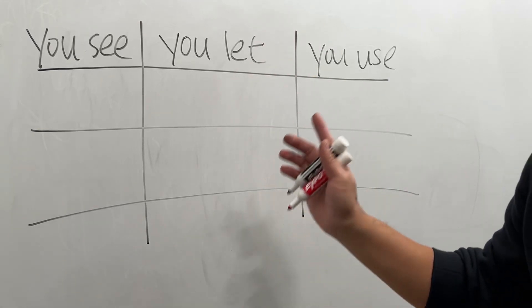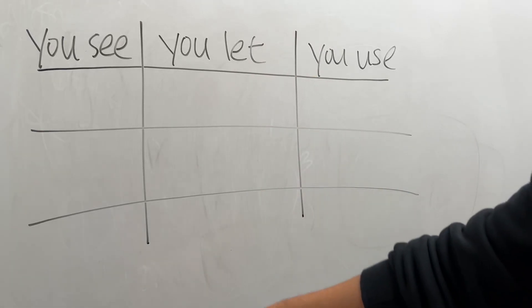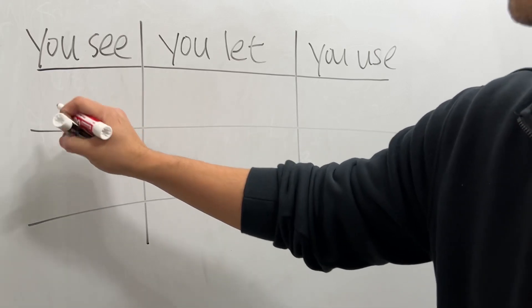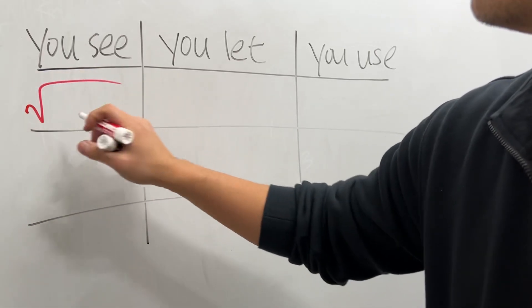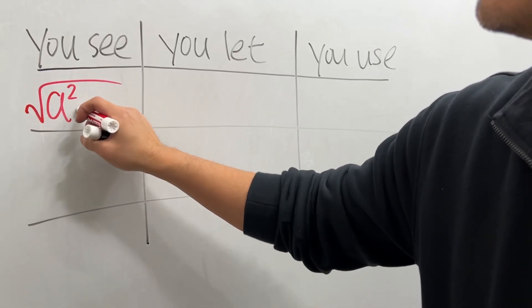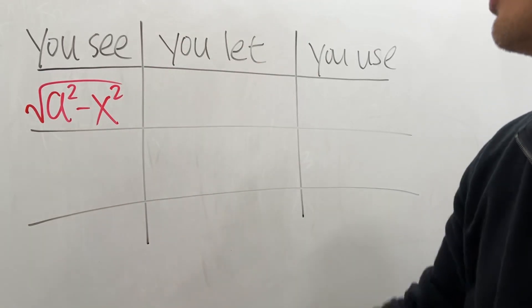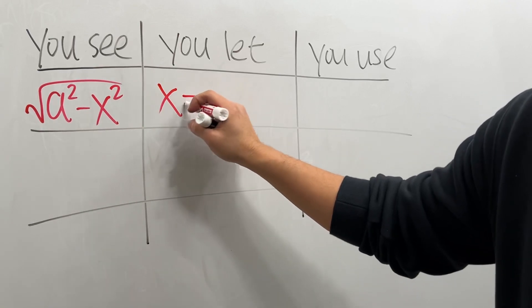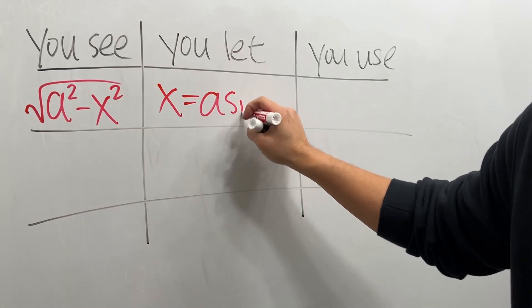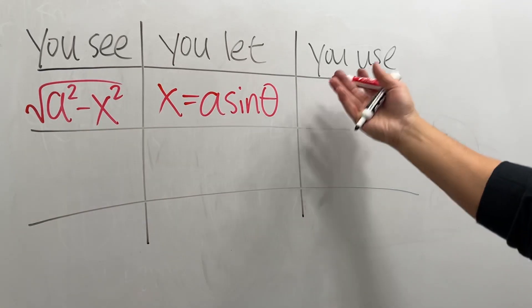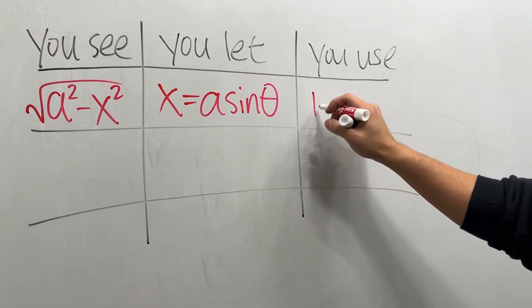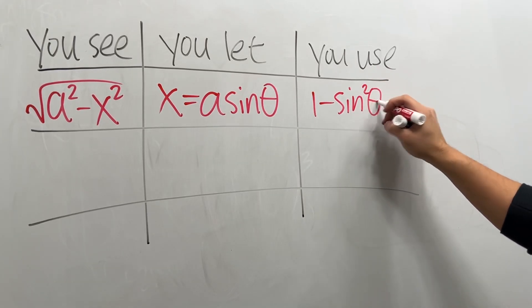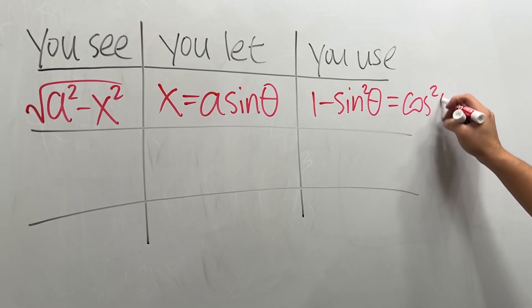This is the trick shop table that will save your calculus tool. Check this out. When you are doing an integral, if you see a square root of a number a squared minus some variable x squared, then what you want to do is say x is equal to a times sine theta. And then you are going to expect to use the fact that we know 1 minus sine squared theta will give you cosine squared theta.